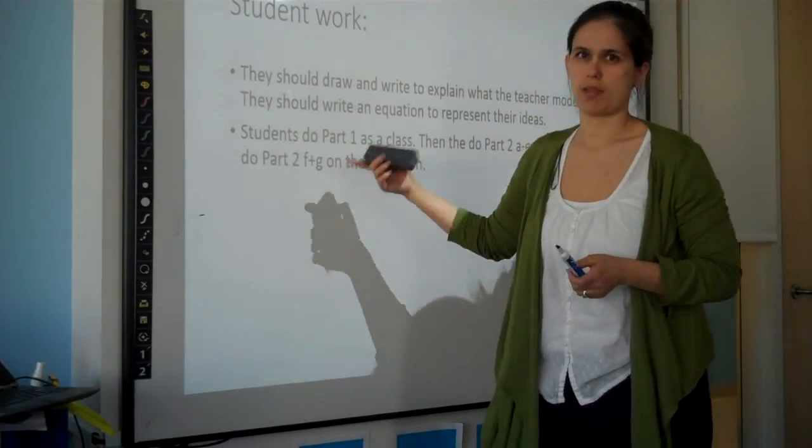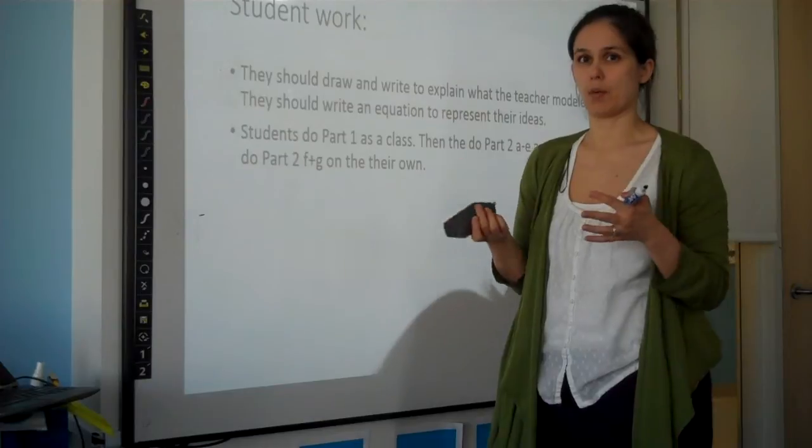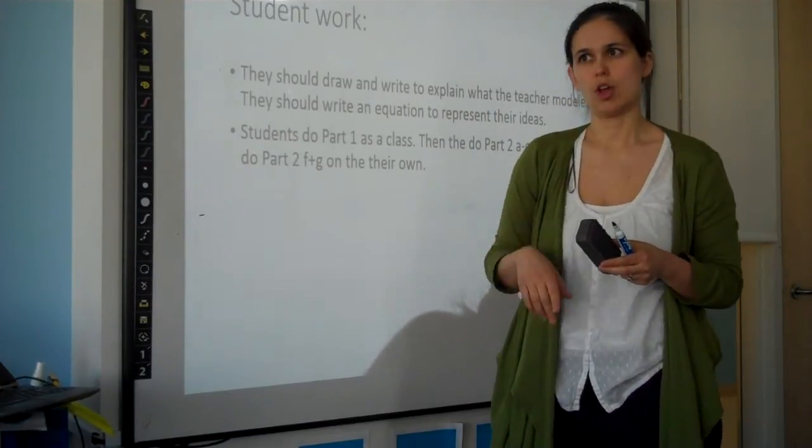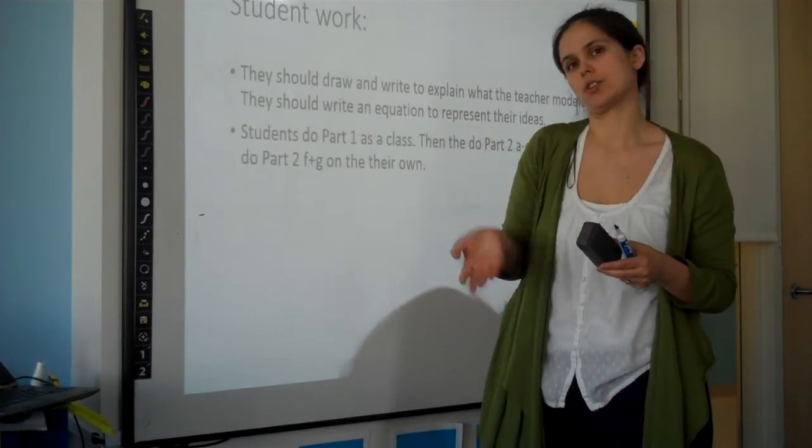Part 2 F and G they do on their own and then you come back and discuss after you've done all that work. And all of this is relating that to place value. Because 10 tens make 100, 10 hundreds make 1000.